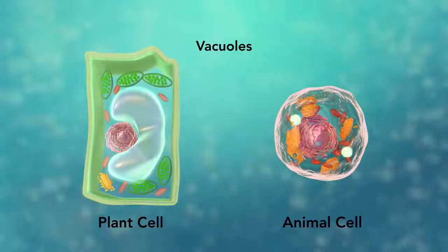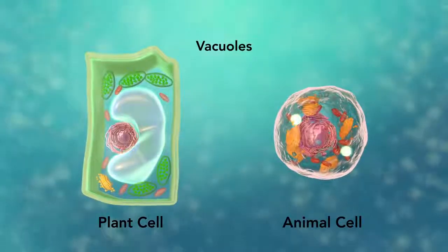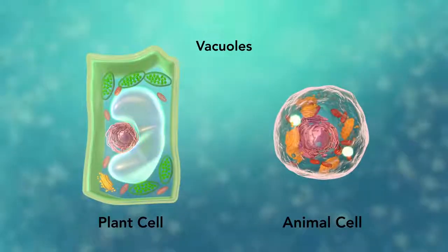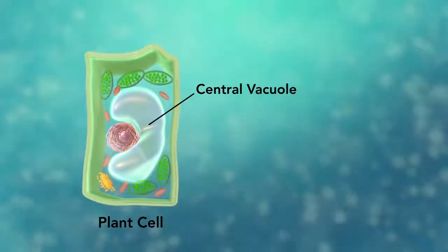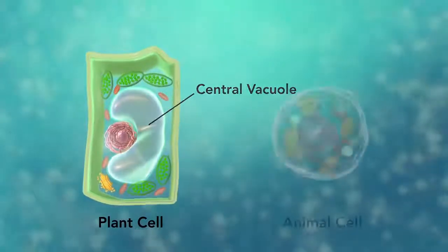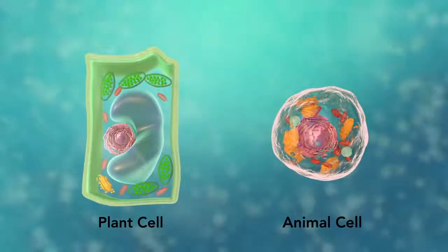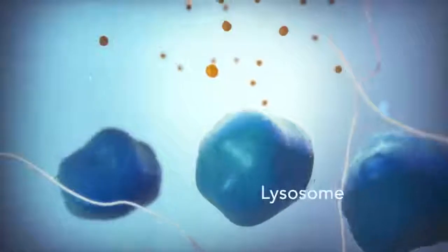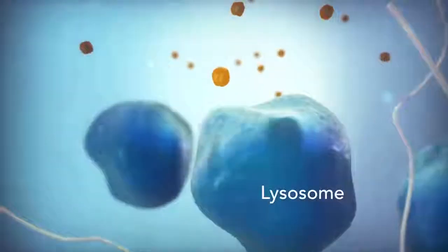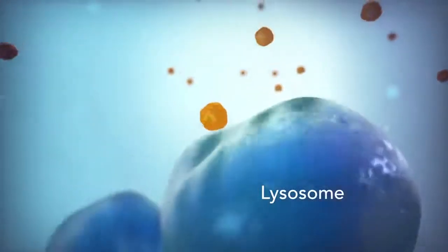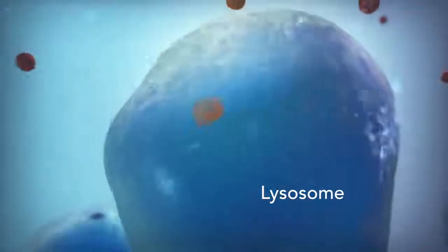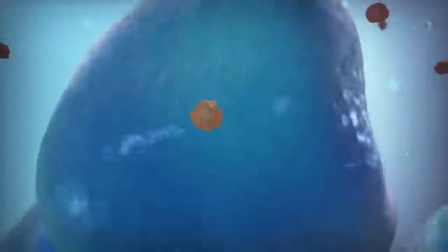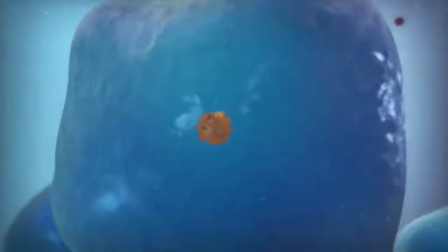Vacuoles are sac-like structures that store different materials. Here, in this plant cell, the central vacuole stores water. Going back to the animal cell, you will see an organelle called a lysosome. Lysosomes are the garbage collectors that take in damaged or worn-out cell parts. They are filled with enzymes that break down this cellular debris.